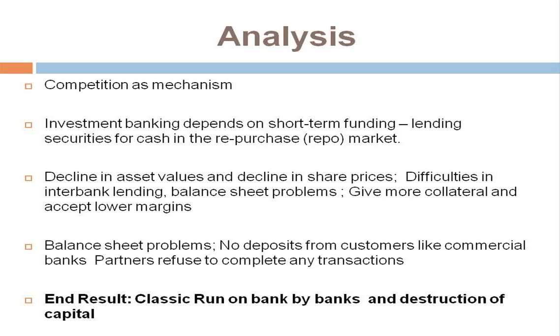Overall, competition as a mechanism was very forceful after 2003. Lehman Brothers and Bear Stearns got into the mortgage market in the first place in 2003. Merrill Lynch entered the market in late 2005 and 2006 by buying other mortgage originators. Investment banking in terms of power relations is based on short-term lending, giving assets, and borrowing. When asset values declined and share prices declined, that created balance sheet problems for the banks and they could not carry out transactions.